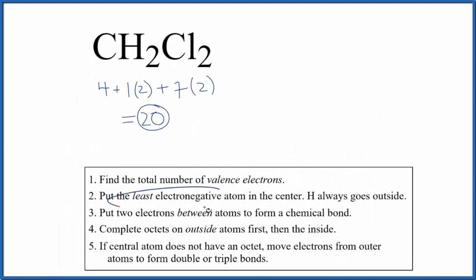We put the least electronegative element in the center, but remember that hydrogen always goes on the outside. So carbon is the least electronegative. We'll put that in the center, and then we'll put two hydrogens and two chlorines around it. Because we have a tetrahedral molecular geometry, it doesn't really matter how we organize the hydrogens and chlorines around that carbon. It'll all end up being the same thing.